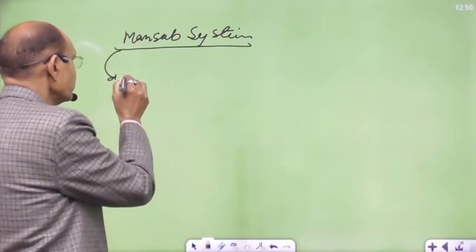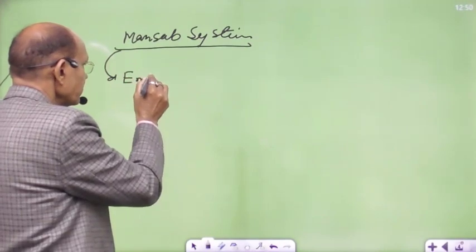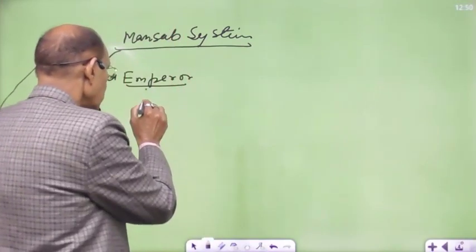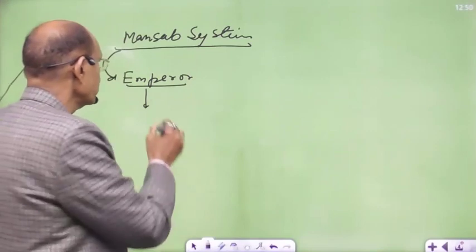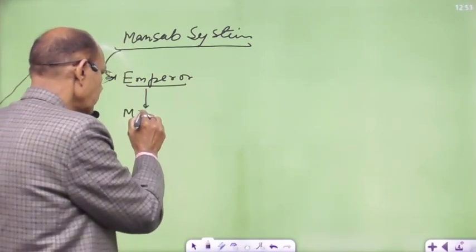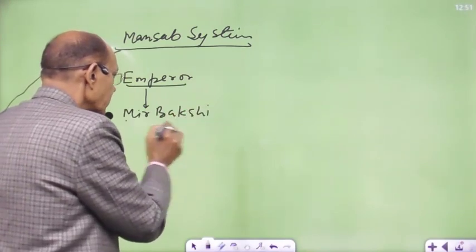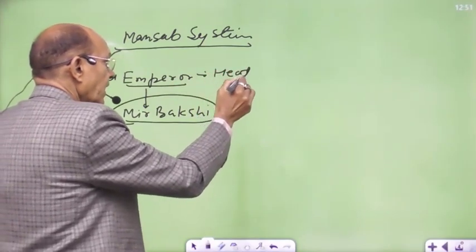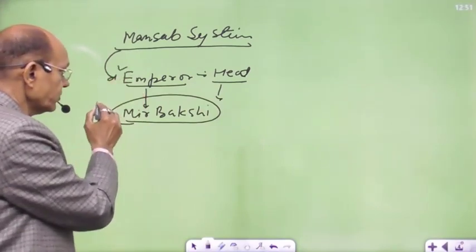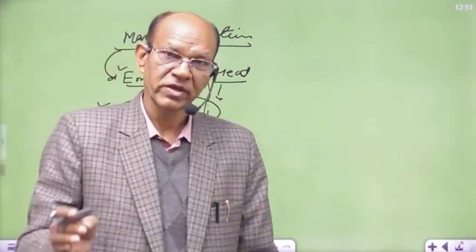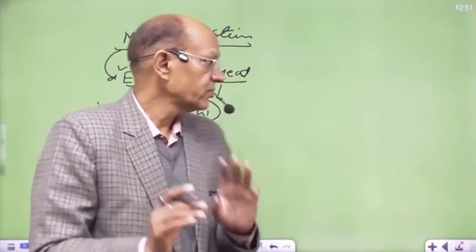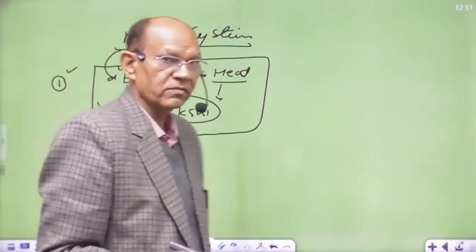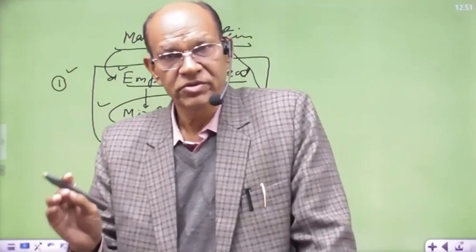Who was the head of this Mansabdari system? The Emperor was the head of this Mansabdari system and it was administered on behalf of the Emperor by Mir Bakshi or the Army Minister. Mir Bakshi was the agent of the Emperor who maintained the record of all the Mansabdars.